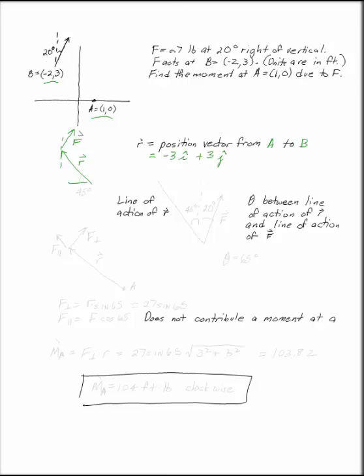You're going to go over to the left 3 and up 3. That gives you a 45-degree angle for this position vector to the horizontal. That's useful because if you draw the line of action for R, you know that it's 45 degrees also to the vertical.